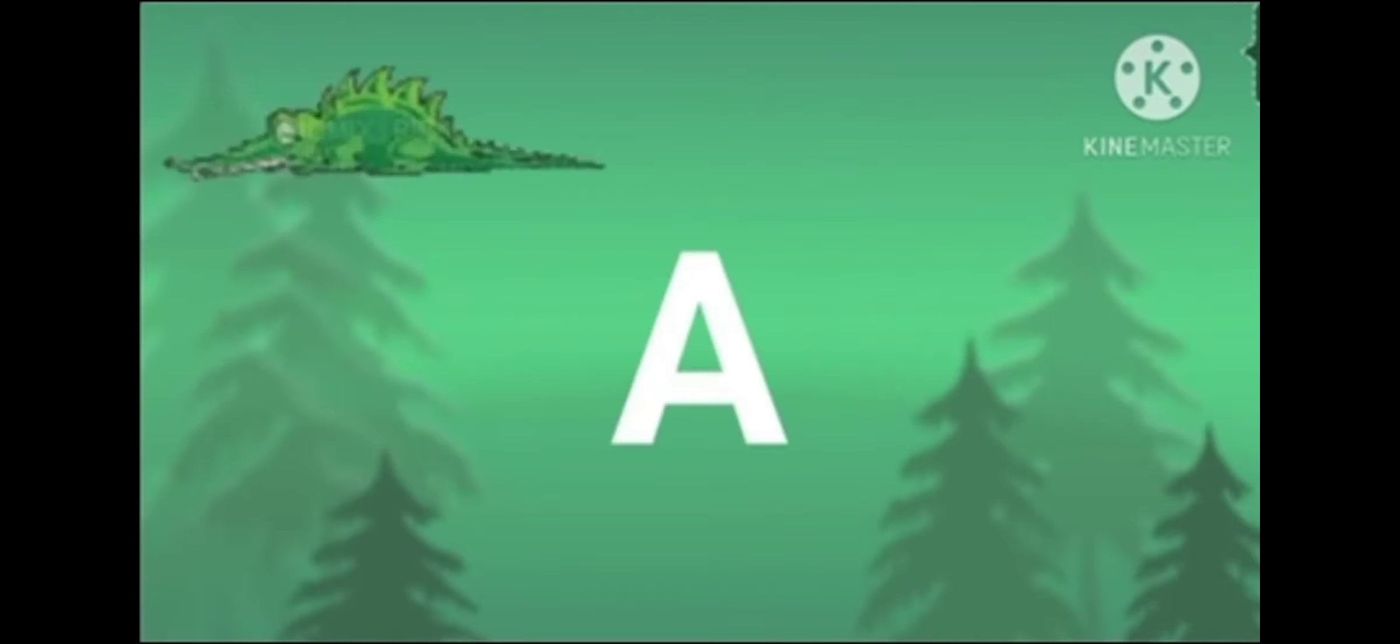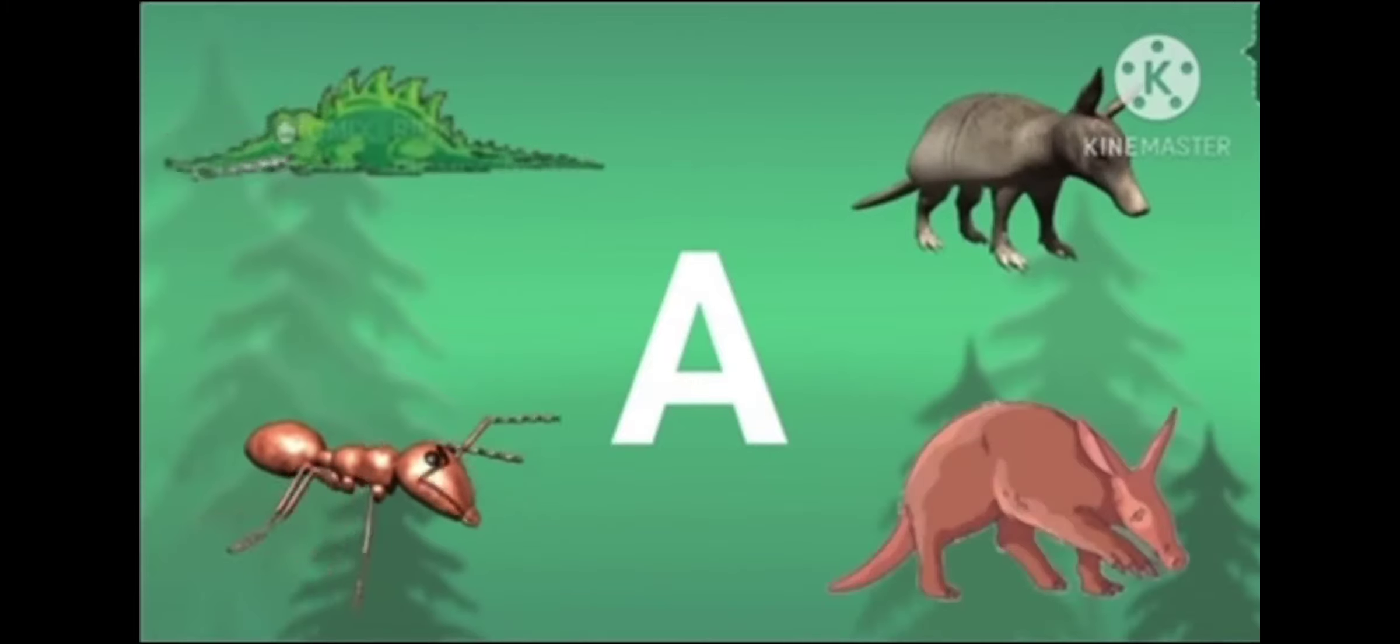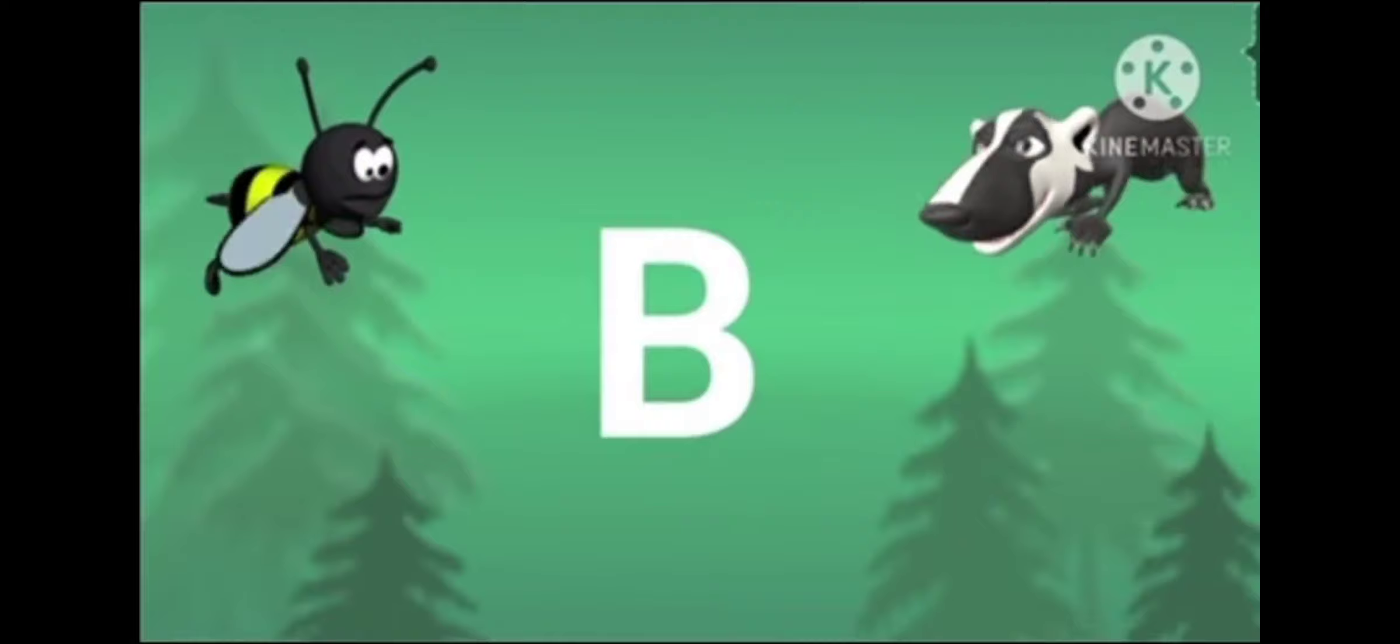A is for alligator, ant and armadillo. A is for aardvark who likes to eat the ants. B is for bumblebee, badger and beaver.